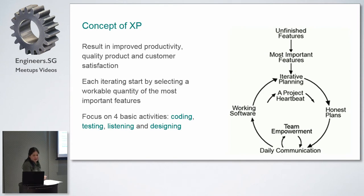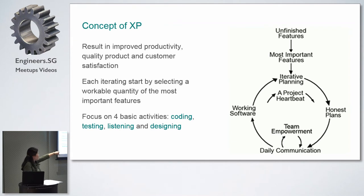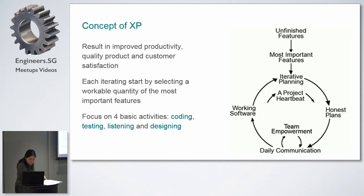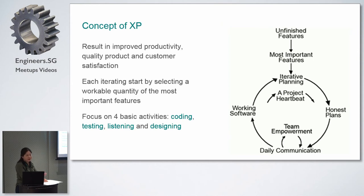This is the concept of XP. If you implement it properly, you get improved productivity, quality product, and customer satisfaction. The loop is the iteration: you have unfinished features, rank them from most to least important, and the most important features get incorporated into your iteration planning. Honest plans, daily communication, team empowerment, and working software — this is the project heartbeat. The four basic coding activities are coding, testing, listening, and designing. That's extreme programming.